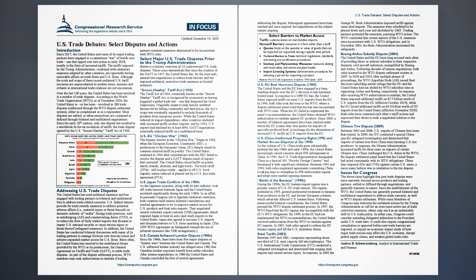U.S.-EU Beef Hormone Dispute, 1989: The United States and the EU have engaged in a long-standing dispute over the EU's decision to ban hormone-treated meat. In response to a 1989 EU ban, the United States imposed tariffs on some U.S. imports from the EU. In 1996, both sides took the issue to the WTO, where a dispute settlement panel ruled that the ban was inconsistent with WTO rules. When the EU failed to implement the panel's recommendations, the United States obtained WTO authorization to retaliate against EU products. Since 2009, a number of bilateral agreements have been reached under which the EU creates duty-free quotas for imports of specially produced beef in exchange for the elimination of increased U.S. tariffs on U.S. imports from the EU.